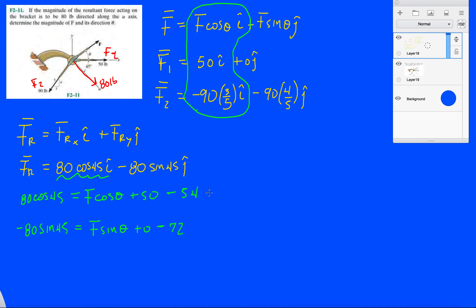Okay, and now let's again isolate F cosine theta and F sine theta in each equation. So F cos theta is going to equal 80 times cosine 45 minus 50 plus 54, which equals 60.6. What is this, pounds?